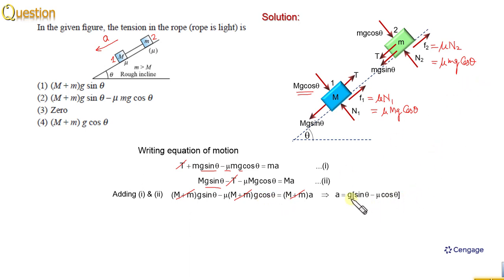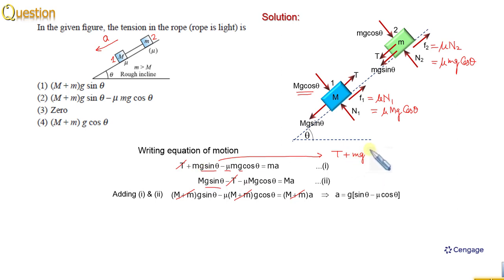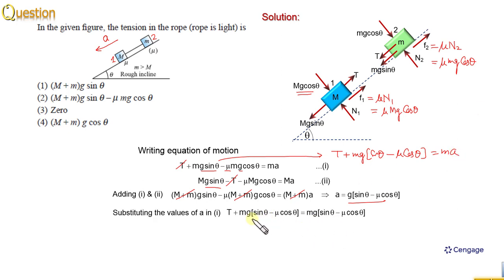Now we can substitute the value of this acceleration into equation number one. Substituting, we get: T + mg(sinθ − μcosθ) = m × g(sinθ − μcosθ). We observe that on the right-hand side and left-hand side, the mg(sinθ − μcosθ) terms cancel out. That means T is equal to 0.